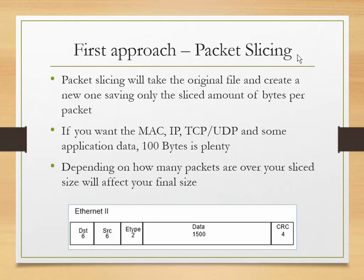Packet slicing takes your trace file and chops off the first N bytes of each packet. I chose 100 bytes — that gives you the MAC address, IP information, TCP/UDP headers, and some application data. Depending on how many packets exceed your slice size, the final file size will vary. Sometimes your trace file goes down 70–80%, sometimes only 2–3% — it all depends on the packet sizes in the trace file.